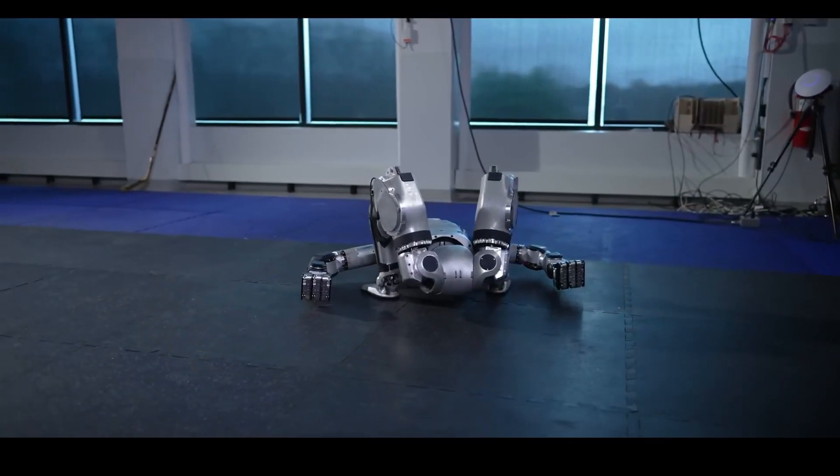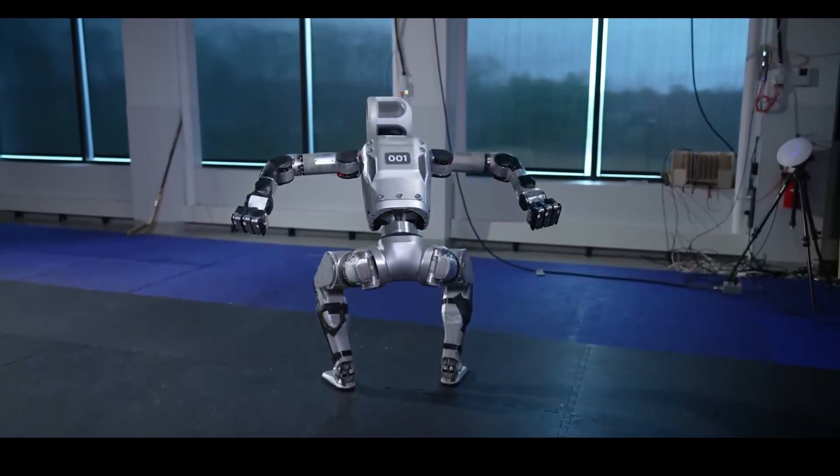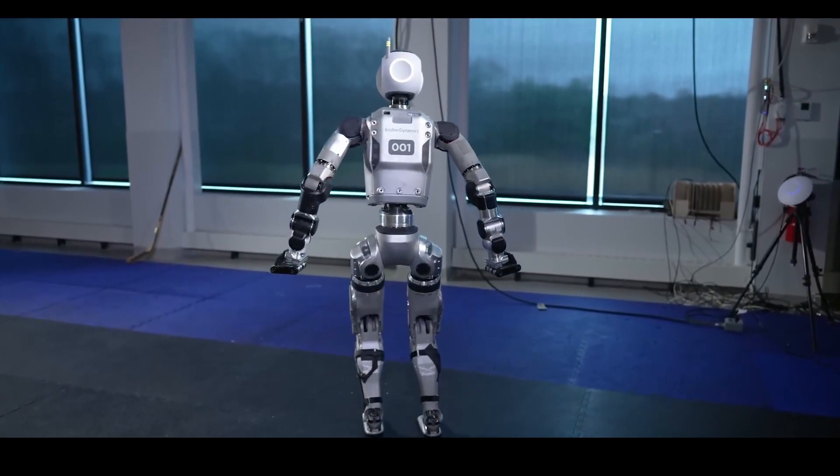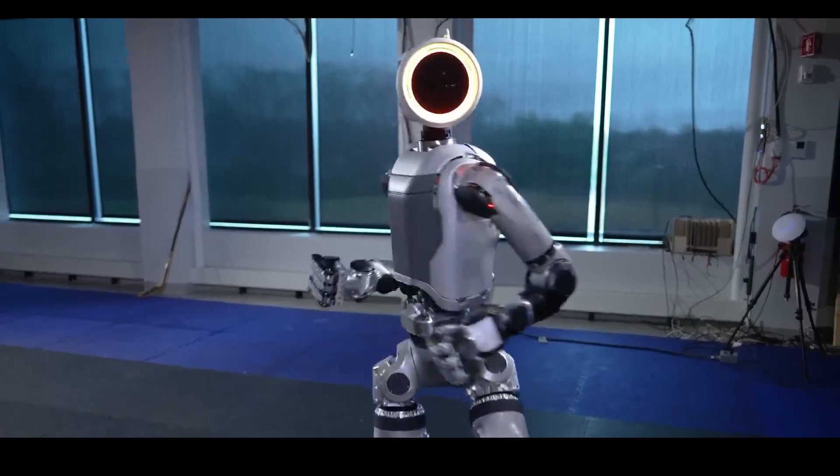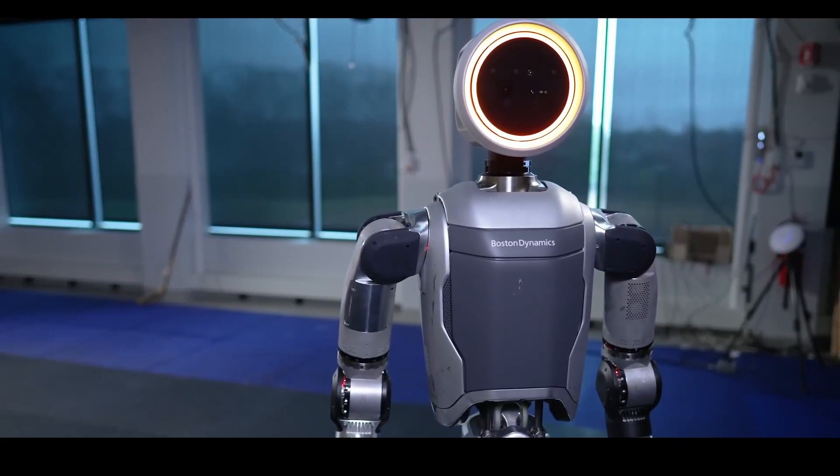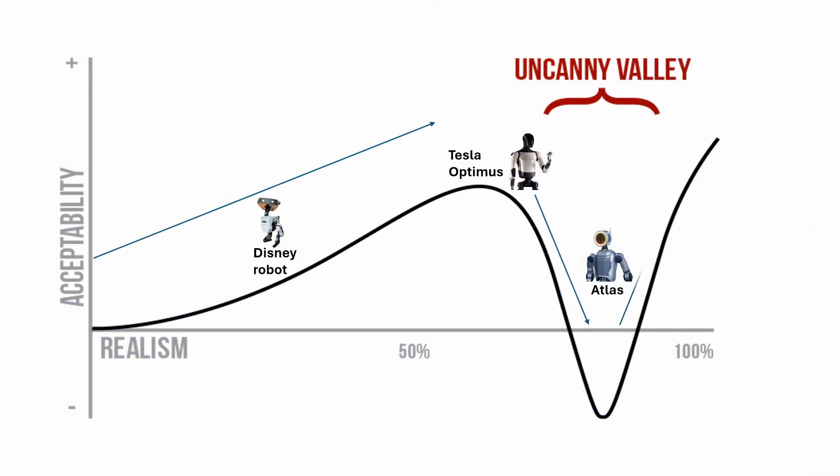It can rise from a completely motionless state to a full standing position in an extraordinary manner, and unnervingly, it can rotate its head in a full 360-degree movement while looking at us. When the realism continues to improve past the uncanny valley, acceptability tends to increase again as they become indistinguishable from humans.